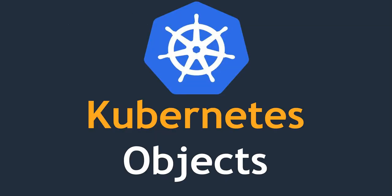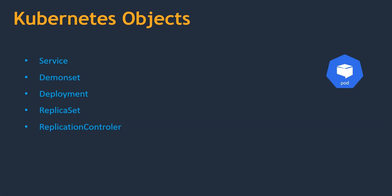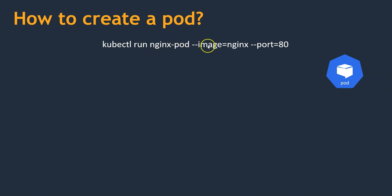To understand the manifest file better, we are going to create objects with the help of a manifest file. The kinds of objects we can create include a pod, service, daemon set, deployment, replica set, replication controller, and a few others. To demonstrate, I am going to show you how to create a pod. First let's understand how to create a pod using a command: kubectl run pod-name --image image-name --port port-number.